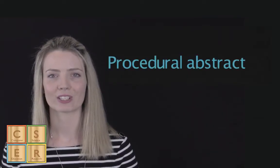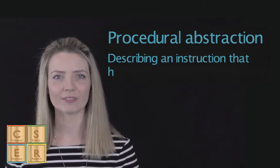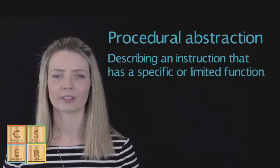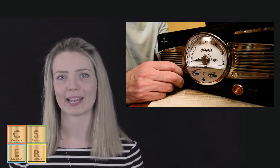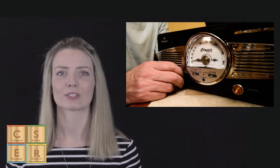Procedural abstraction involves describing an instruction that has a specific or limited function. For example, please turn the volume down. We don't need to describe every single step involved in the process, but simply asking can you please turn the volume down provides the person with the information they need to understand what we mean.